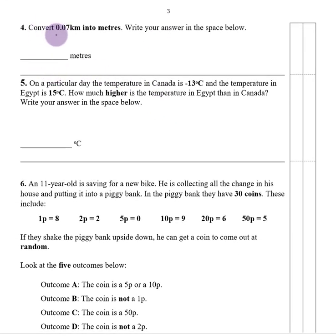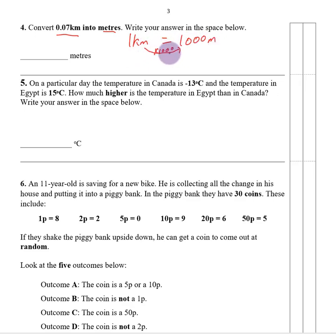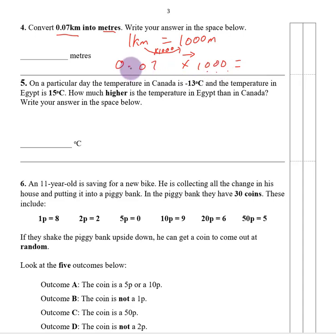Number four. Convert 0.07 kilometres into metres. First we need to know the conversion: 1 kilometre equals 1000 metres. To turn kilometres into metres we multiply by 1000. So 0.07 times by 1000 — when multiplying by 1000 the decimal point moves three places to the right, because there are three zeros. So it moves 1, 2, 3 places. We need to put a zero in the gap, giving us 70 metres.